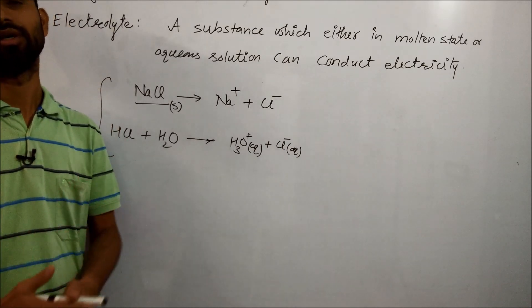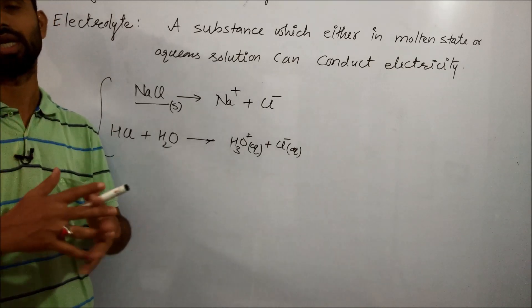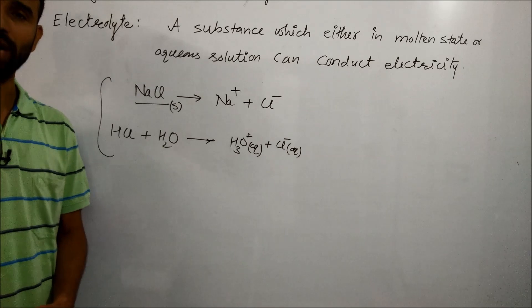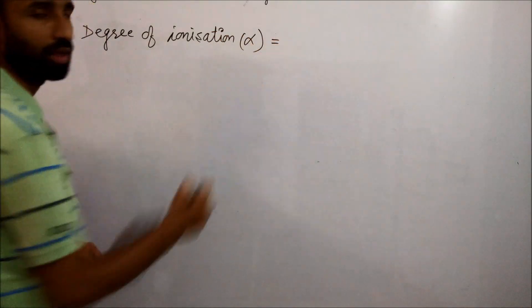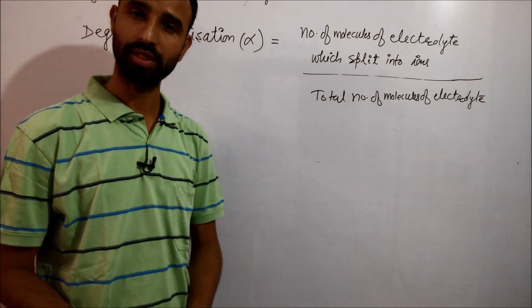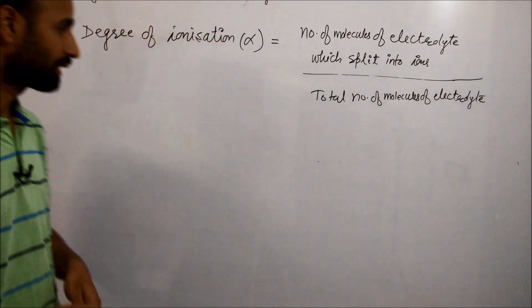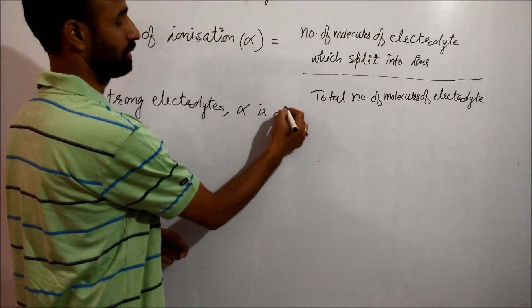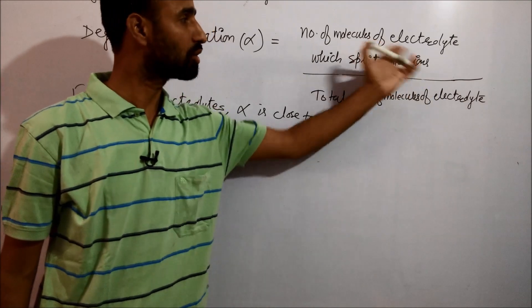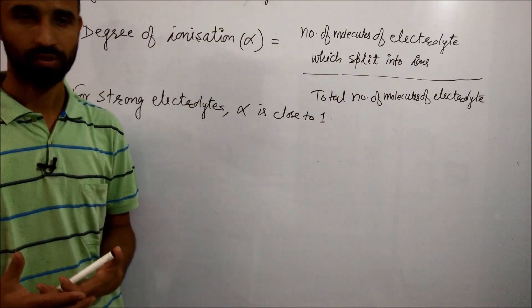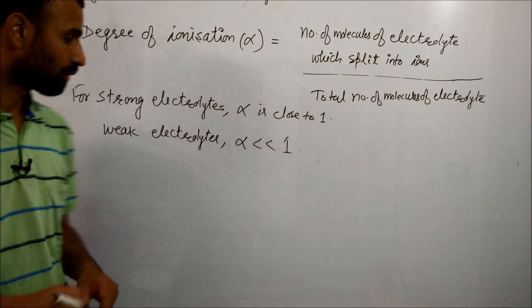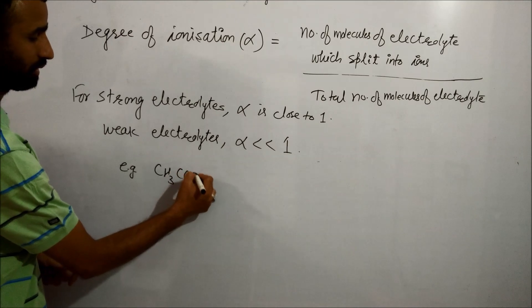Electrolytes which dissociate only to a certain extent are called weak electrolytes. The strength of an electrolyte is expressed in terms of degree of ionization, represented by alpha (α). For strong electrolytes, α is close to 1, meaning all molecules dissociate into ions, but for weak electrolytes, α is very much less than 1.